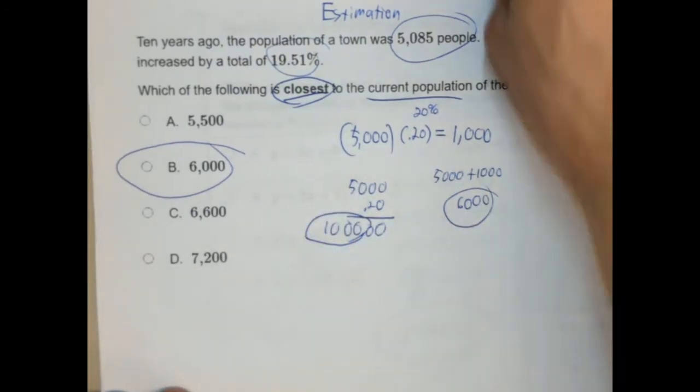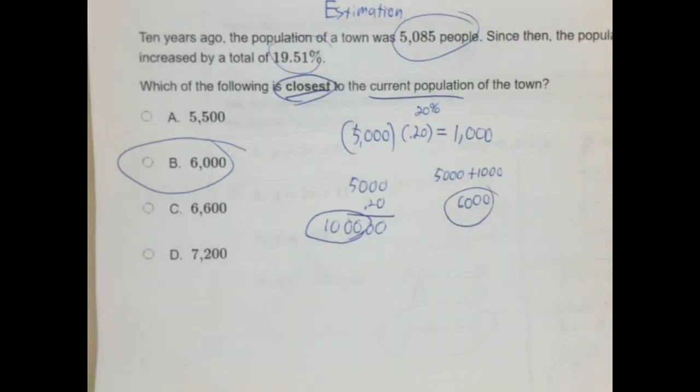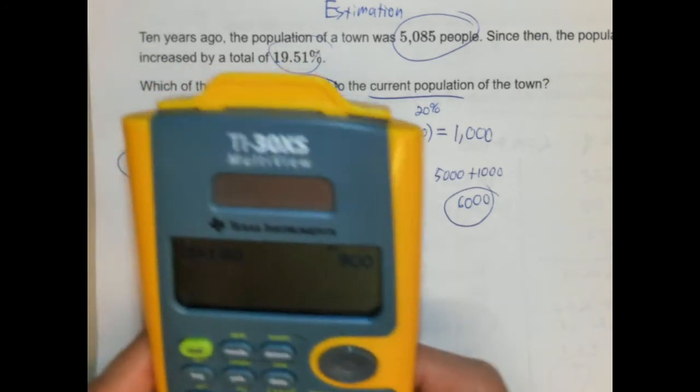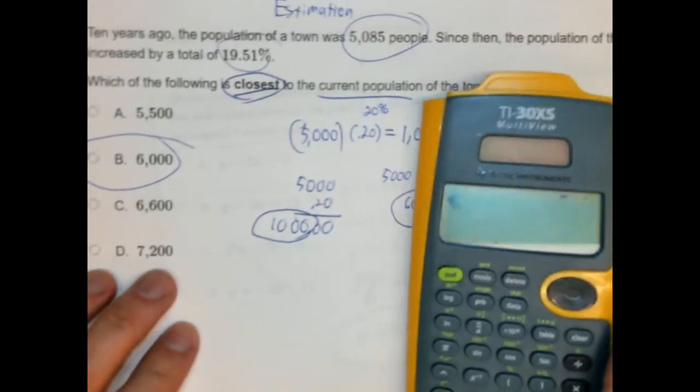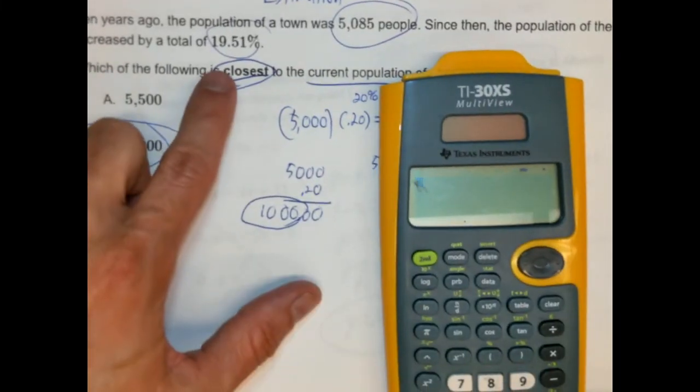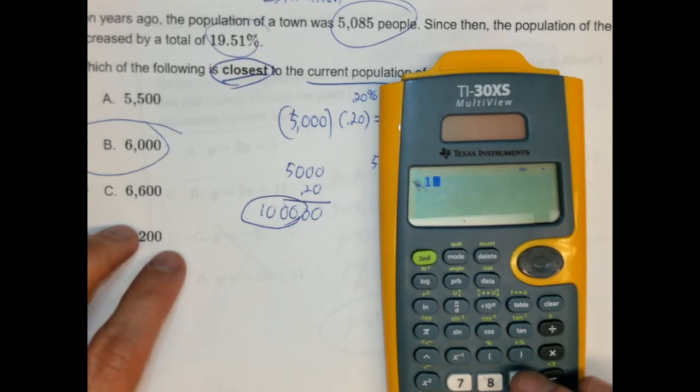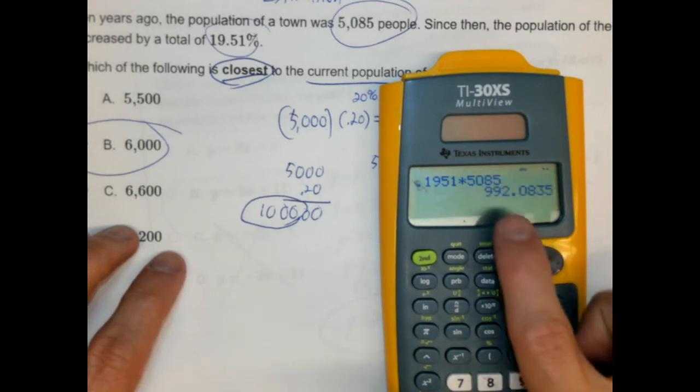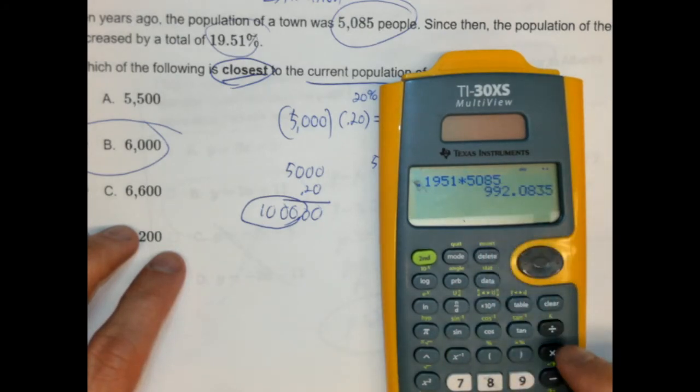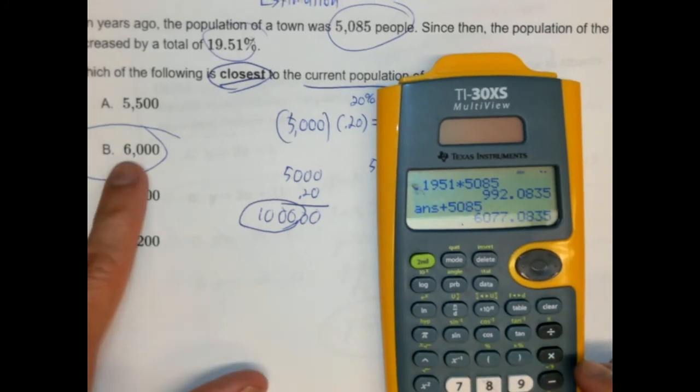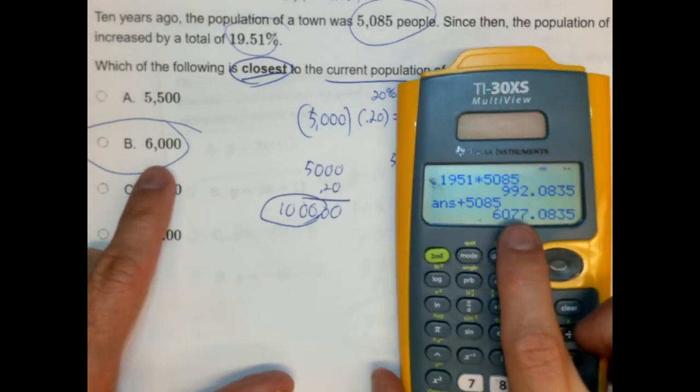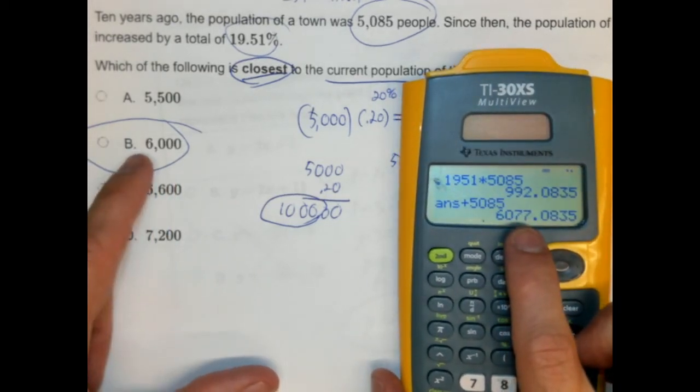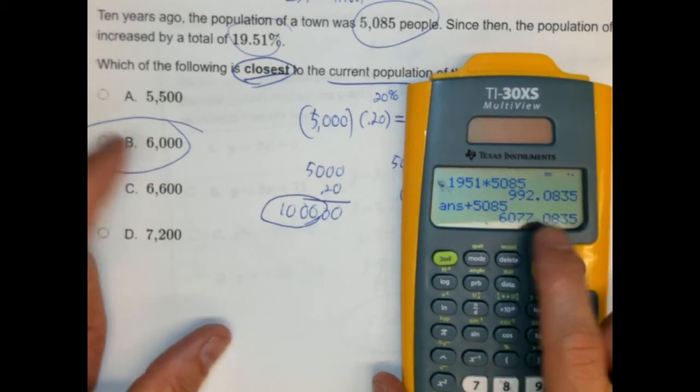If you were to do this out without estimating it, let's do that right now. Let's see what we get if we had a calculator available to us. So I'm going to convert this to a decimal. So 0.1951 times 5,085. That's just under 1,000. So it's not a big difference. And we're going to add that to 5,085. Yep. And that's closest to it. So this is the actual amount it would be at. So we're only 77 off. The rest of these are much further away from us. So yeah, we worked out okay.